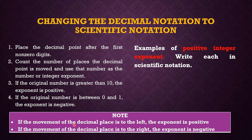Note: if the movement of the decimal place is to the left, the exponent is positive. If the movement of the decimal place is to the right, the exponent is negative.